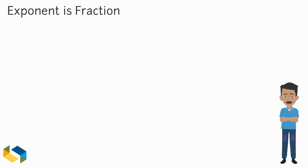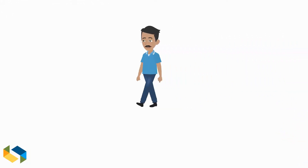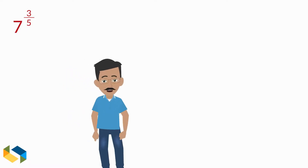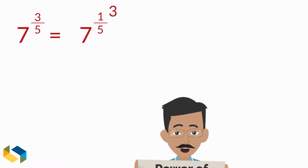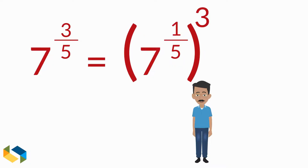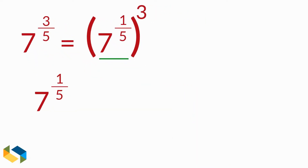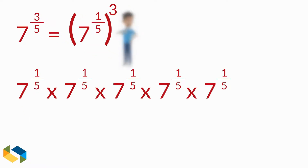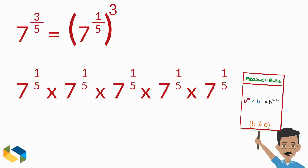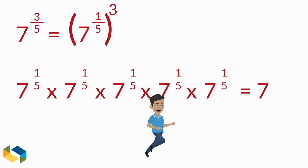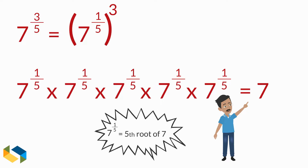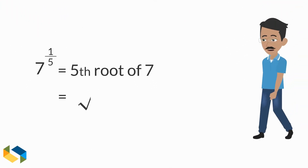Now, if the exponent is a fraction, things tend to be a little complicated — but nothing we cannot figure out. Let's take an example: 7 raised to the power 3 over 5. By the power rule we saw earlier, this can be written as 7 raised to the power one-fifth, the whole raised to the power 3. Now if we take this expression and multiply it by itself 5 times — which is also the denominator here — we get to apply the product rule, and the answer is 7. Hence 7 raised to the power one-fifth is nothing but the fifth root of 7.